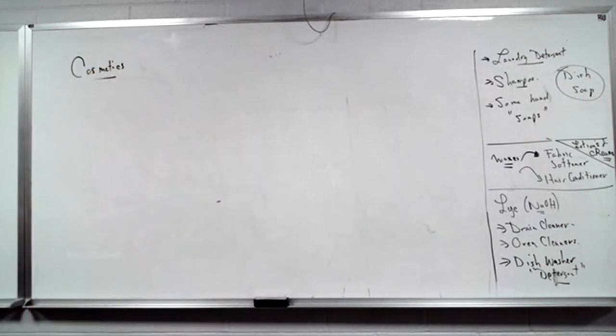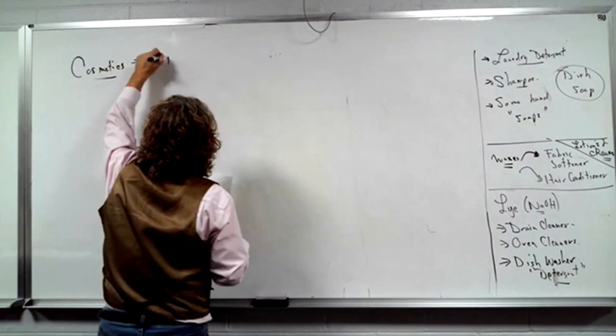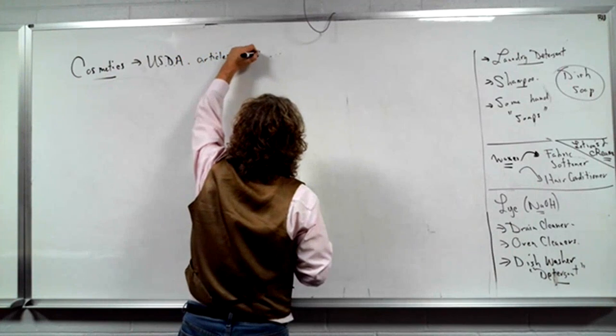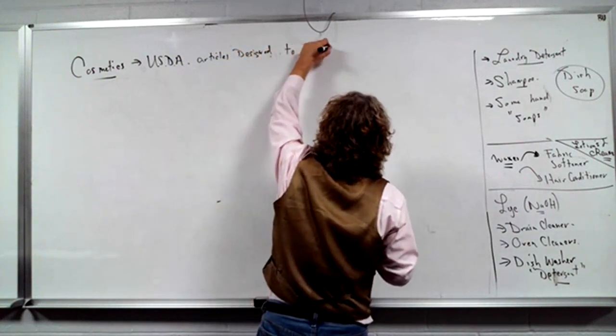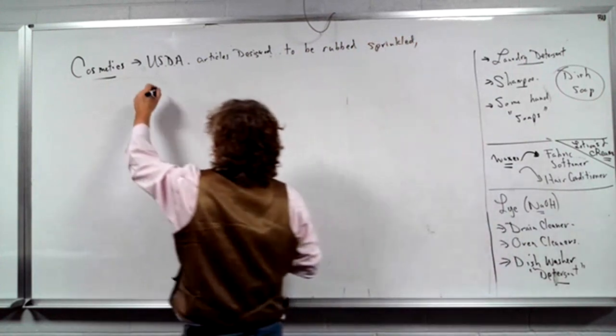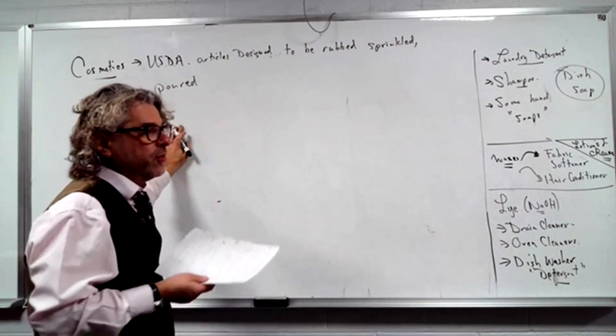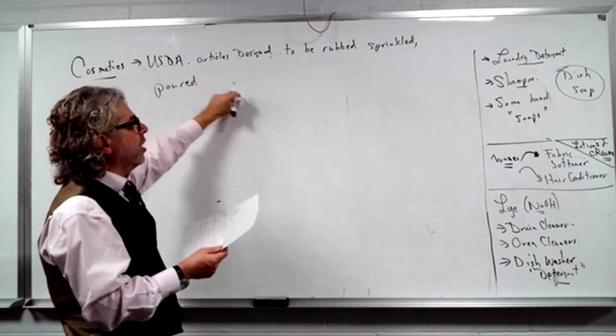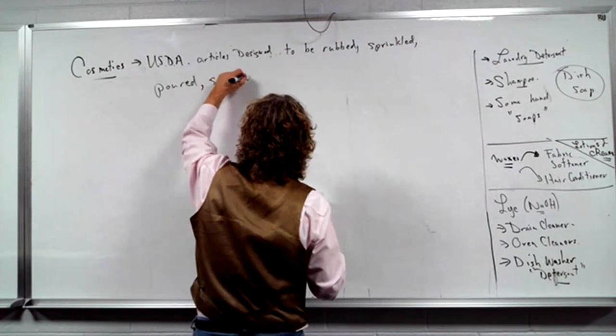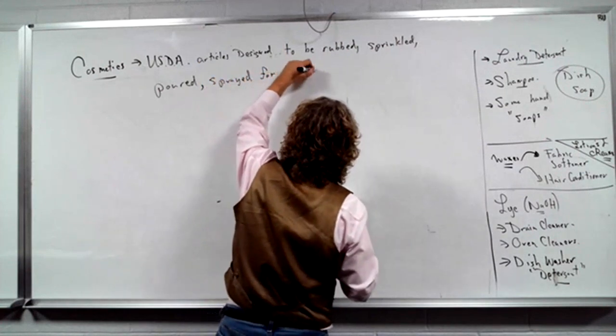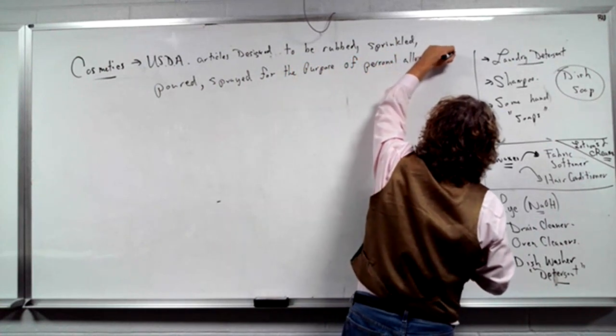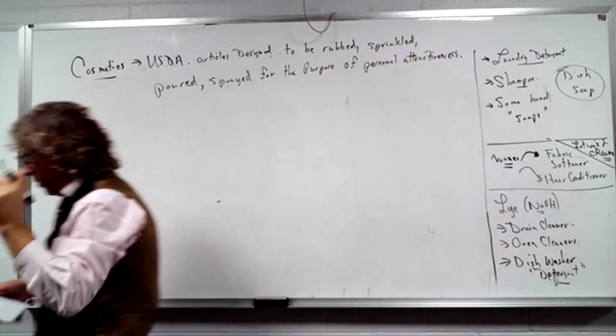There's a definition for them. Food and Drug Administration, USDA. Articles designed to be rubbed, sprinkled, poured. This is how codes and federal regulation are written. They want to make sure they can go to court with you doing anything. So rubbed or sprinkled or poured, CFR 22 or something, or sprayed for the purpose of personal attractiveness. They actually have a definition for everything the government does. Well, that's your definition.